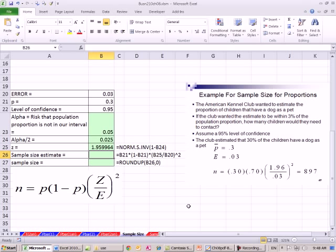So our sample size estimate, we have our P times 1 minus our P. And then I'm going to have to multiply that in parentheses. We have the z divided by our error. Z, error. Close parentheses, and we'll square that.